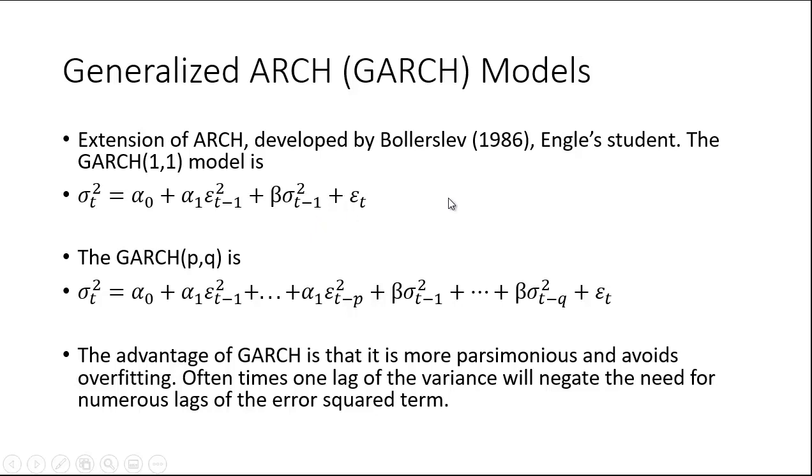Why do you do this? It turns out that sometimes when you're running an ARCH model, you may have lots and lots of these squared error terms. Oftentimes, adding one lag of the variance term picks up a lot of that and makes it a much more parsimonious model, avoiding overfitting. It's an extension. You could have p lags for the squared error term and q lags for the variance terms, but oftentimes a (1,1) model fits pretty well.